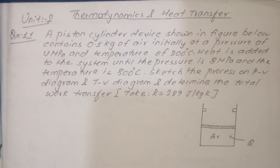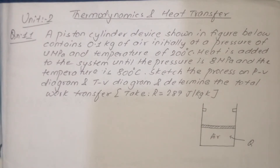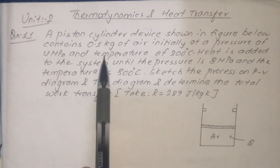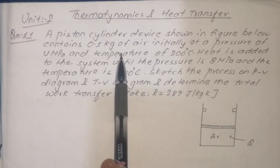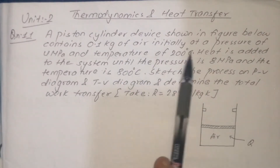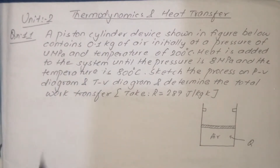The question is given: a piston-cylinder device as shown in the figure. The piston cylinder contains 0.1 kg of air. We are given the mass of air is 0.1 kg, and the air is initially at a certain pressure. We need to find the solution.